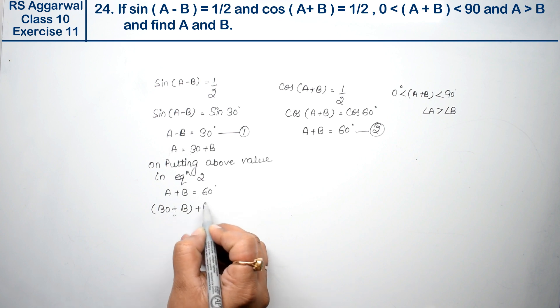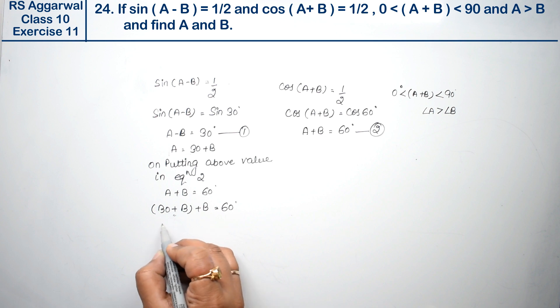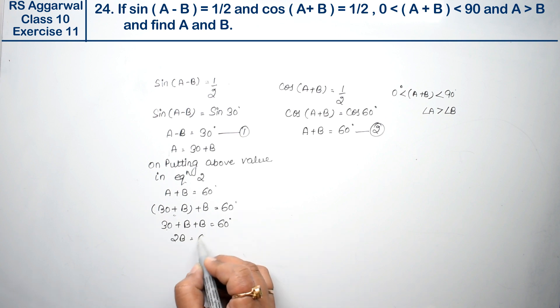Plus B equals to 60 degree. Opening bracket: plus B plus B equals to 60 degree. This 30 goes to the other side, so 2B equals to 60 minus 30. B ki value is 30 degree, and this 2 comes down. 60 minus 30 is 30, and 2 comes down, so B ki value is 15 degree.